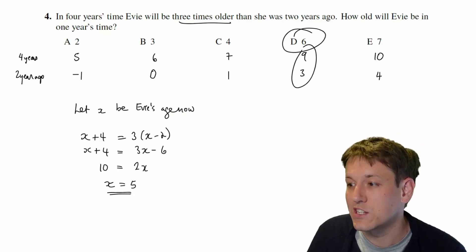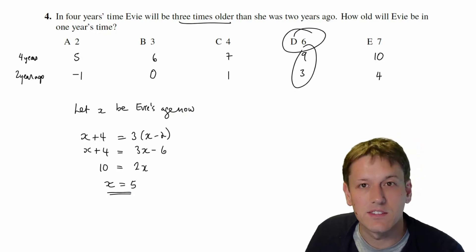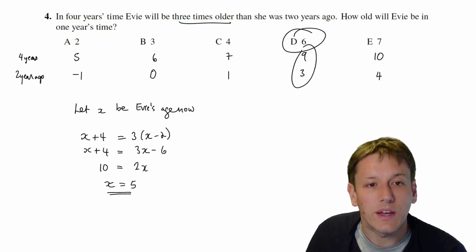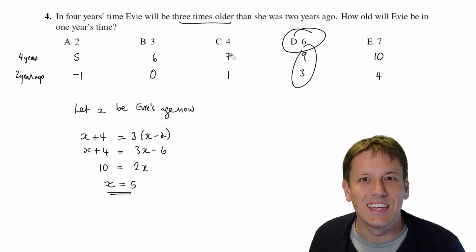And now of course if Evie is five now, in one year's time she'll be six. So there's another way to do it with algebra. So if you're fast with algebra maybe that's quick or just as quick, but don't be afraid in the maths challenge to use the multiple choice options. It's meant to be a bit about your mental agility and solving the questions in the time as well.